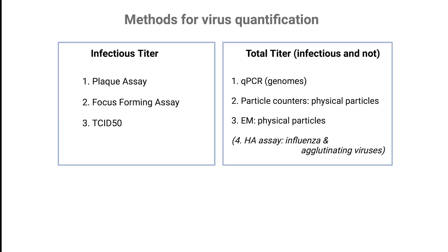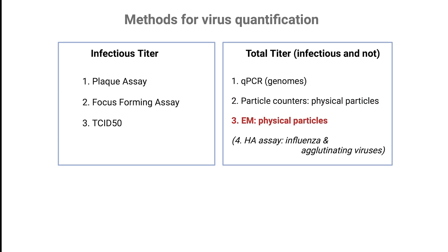Now let's look at methods for determining the total virus titer, which includes both infectious and non-infectious particles. QRT-PCR quantifies viral genomes with high sensitivity, giving an accurate measure of total viral RNA or DNA. Particle counters determine the size and concentration of virus-like particles in a sample. Electron microscopy provides direct visualization of viral particles, confirming their morphology. Finally, the hemagglutination assay, used mainly for influenza, measures the virus's ability to bind red blood cells, estimating total viral particles.